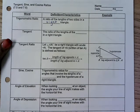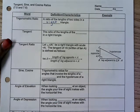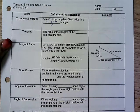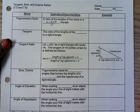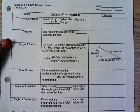With the trigonometric ratio, you're not going to be given two sides of the triangle, so you can't use the Pythagorean Theorem. So when you can't use the Pythagorean Theorem, what are you going to do to solve your right triangle? With that, we use what we call the tangent, sine, and cosine ratios.